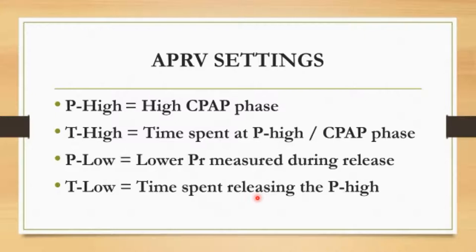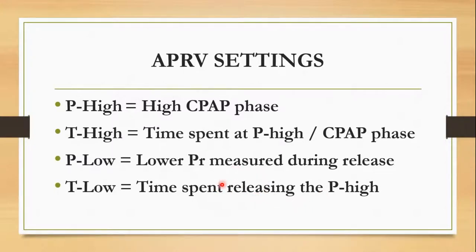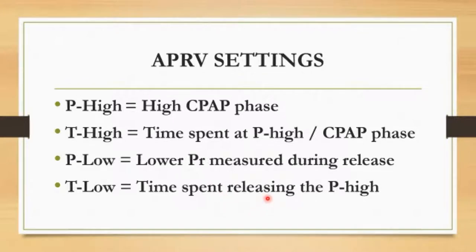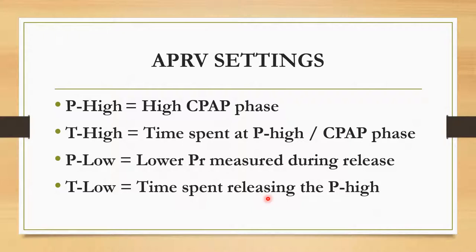The T-low is dependent on the patient's peak expiratory flow. We look at the peak expiratory flow and want to trap 75% of it. This creates intrinsic PEEP — we're purposely auto-trapping. That's why we don't set the P-low; we measure it. We actually put the P-low setting on the vent at zero.